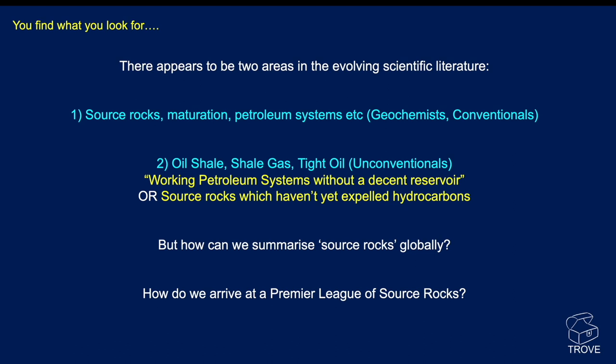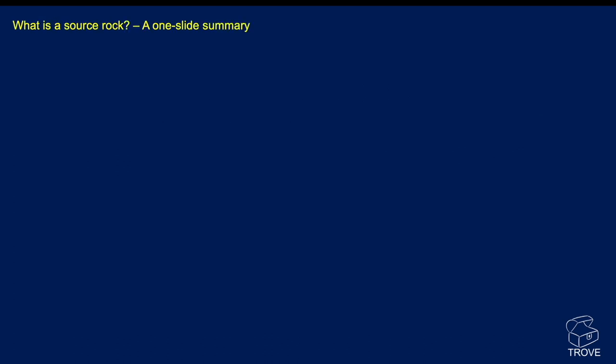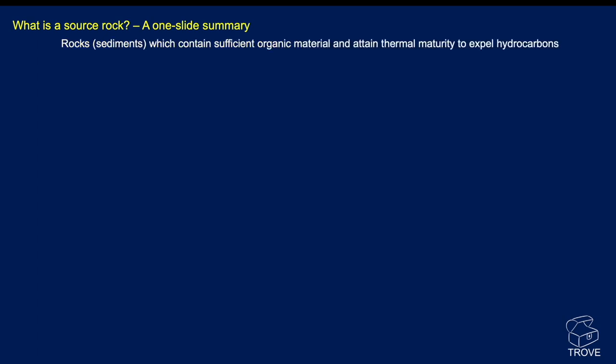How can we summarise source rocks globally? We can come up with a huge list of alternative source rocks, but how do we arrive at a Premier League? Here in a one-slide summary is what a source rock is. Rocks — almost exclusively sedimentary rocks — which contain sufficient organic material and attain thermal maturity to expel hydrocarbons. That's a very simple and yet good definition.